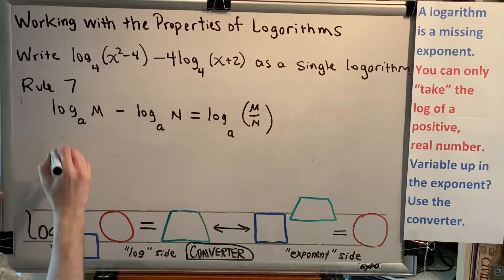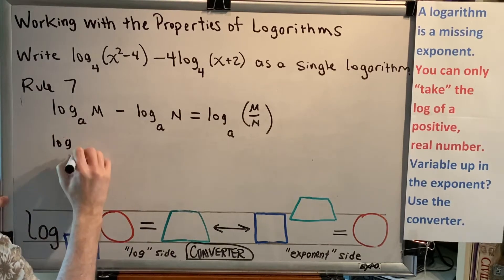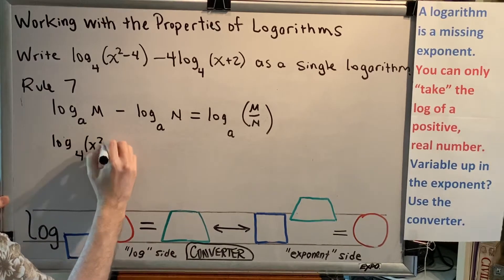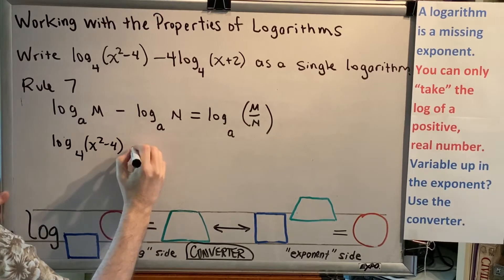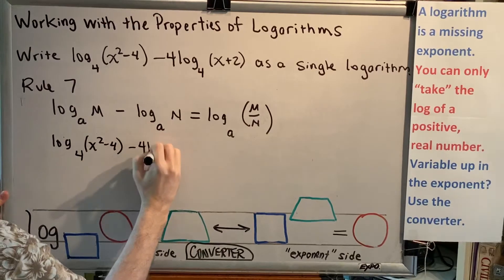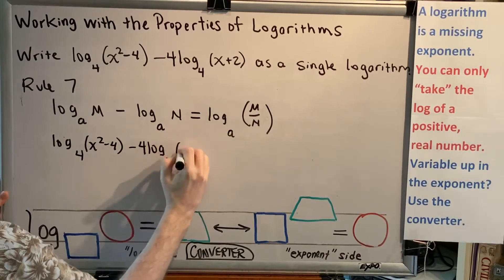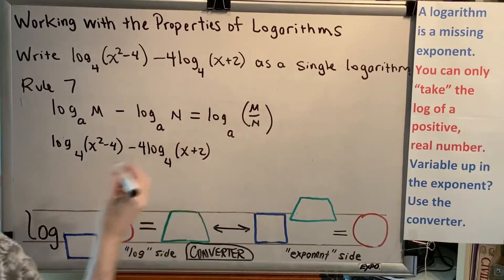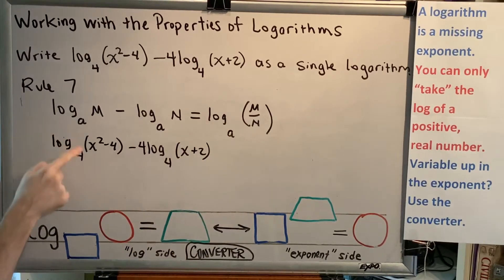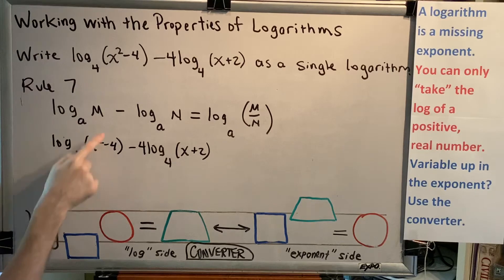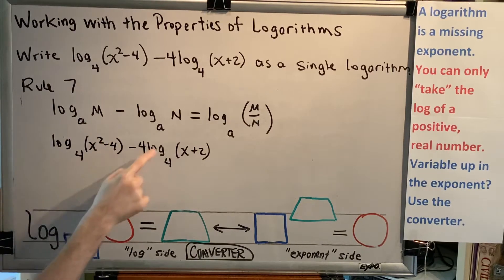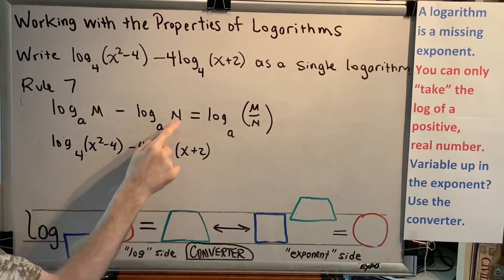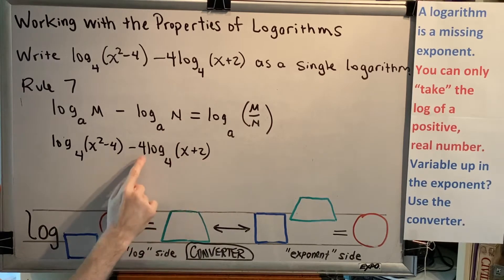Whenever you want to use a log rule, you have to have a place for everything and everything in its place. If there's anything extra or if there's anything missing, you can't use that log rule. In our particular instance, the base a is 4, the first argument m is x squared minus 4, the base a is 4, the second argument n is x plus 2. But what do we do with this 4? It's extra.